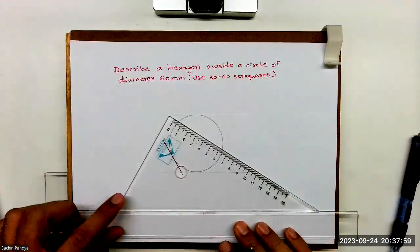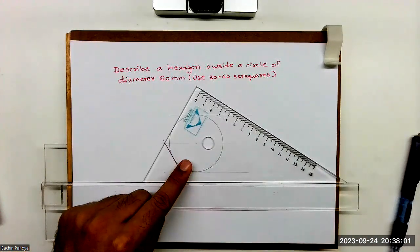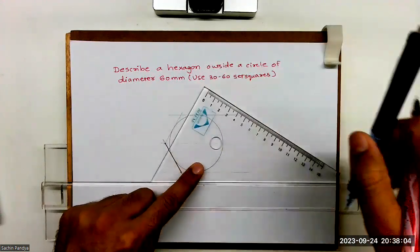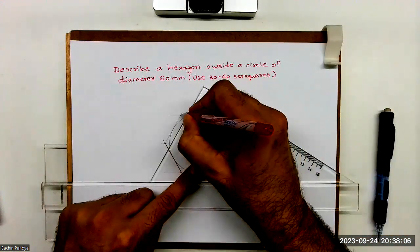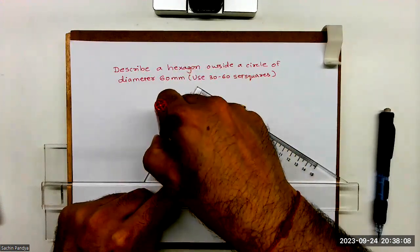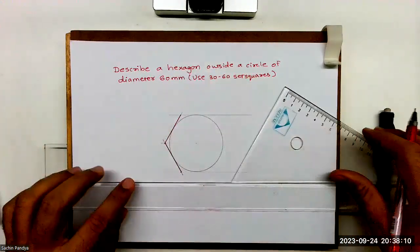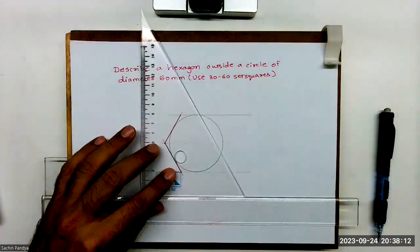The same way, I'll keep set square like this. And again, I will draw a line wherever it will cut with this horizontal line. See, same thing, I will draw it here.